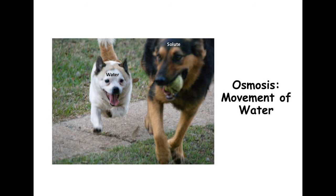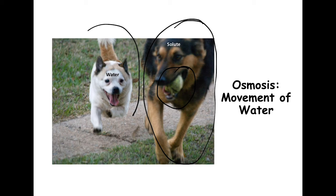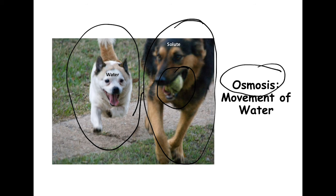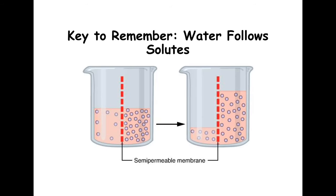Now here's a good lead-in to osmosis. Imagine a dog named Solute — solutes are like salts and things dissolved in liquid. Another dog named Water is chasing Solute. This illustrates the key principle: when we talk about the movement of water, which is called osmosis, the most important rule is that water follows solutes.